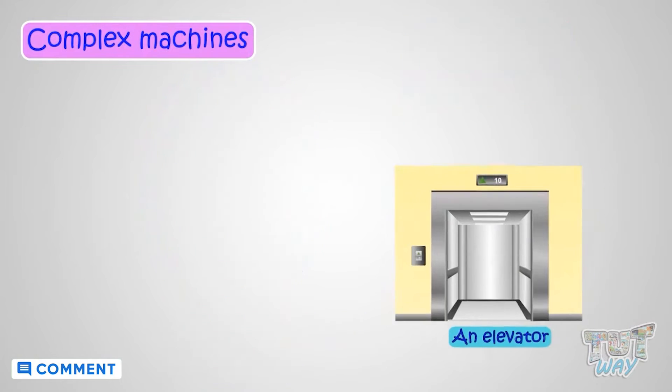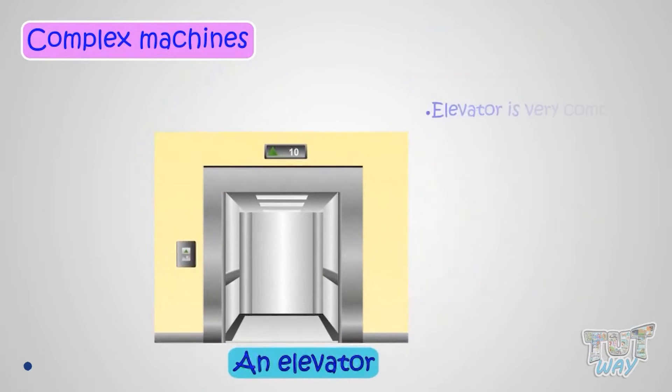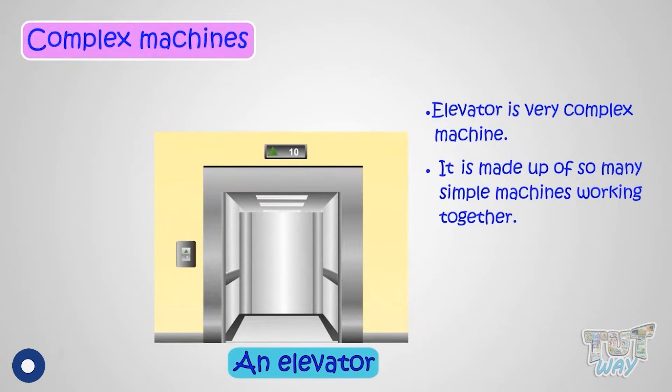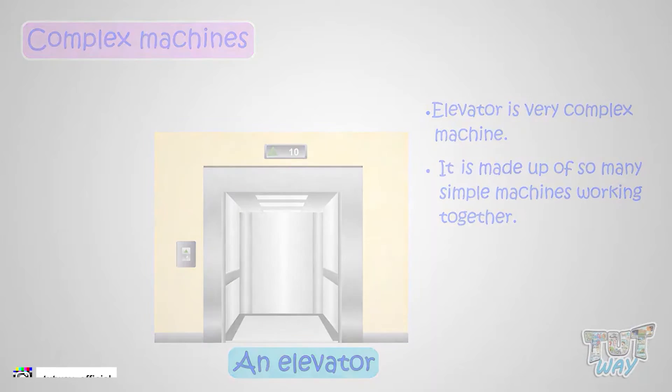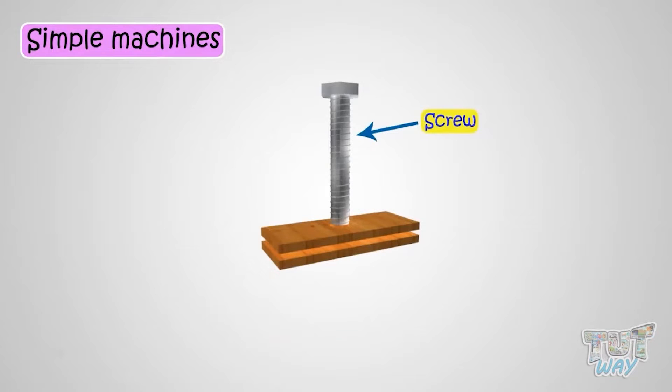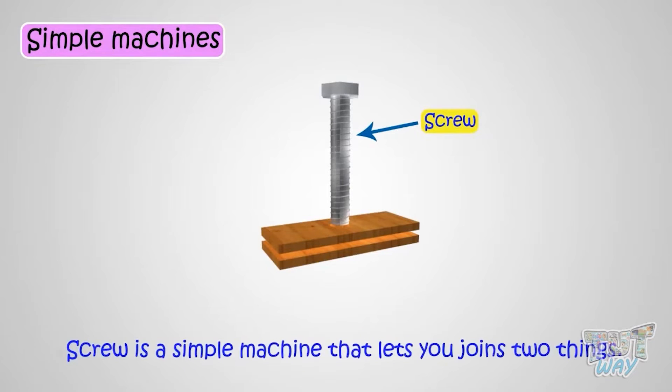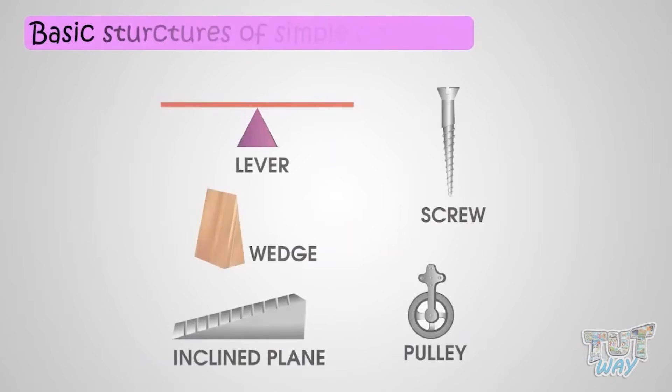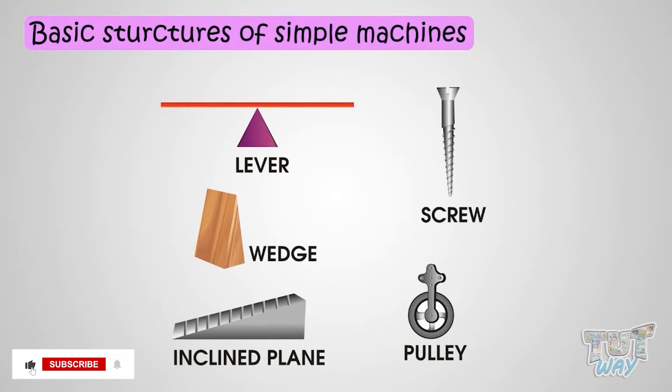So an elevator is a very complex machine which is made up of so many simple machines working together. Now let's take an example of simple machines. A screw is a simple machine that lets you join two things. So kids, let's learn about a few basic structures that are quite simple machines.